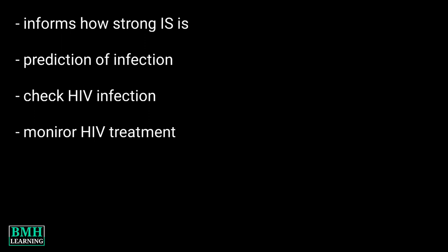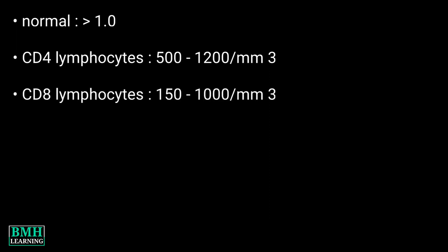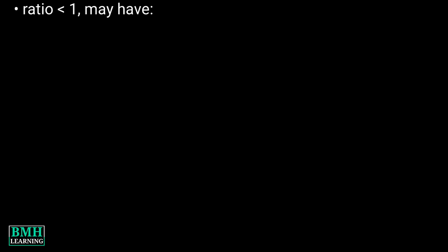Results and interpretation: a normal CD4 to CD8 ratio is greater than 1.0, with CD4 lymphocytes ranging from 500 to 1200 per mm³ and CD8 lymphocytes ranging from 150 to 1000 per mm³.